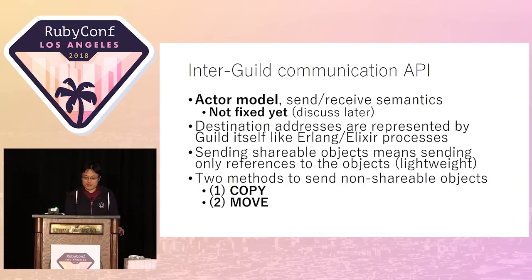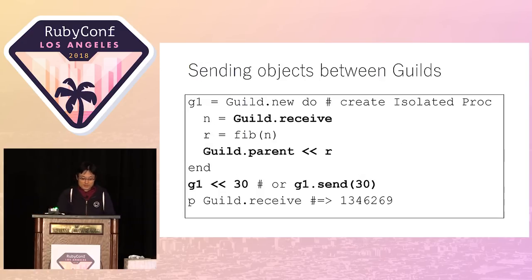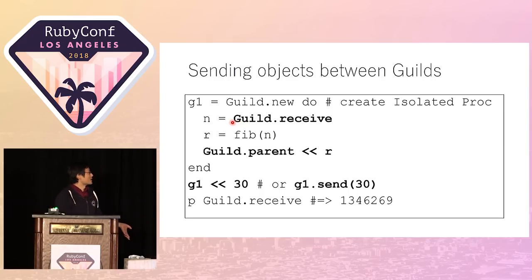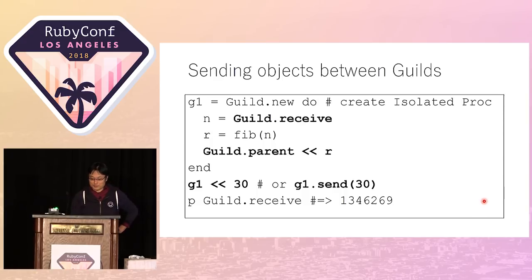If we send a non-shareable object, we have two methods: the copy method and the move method. This is a very simple server-client program using the inter-guild communication API. This line shows how to send an object to guild one — in this case, the numeric object 30 is sent to guild one. At guild one, this line receives the object, calculates something, and this line returns the result of the calculation. This is a very simple example of a server-client model with Guild.